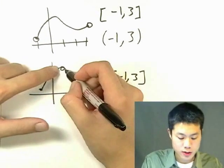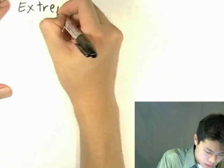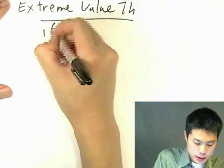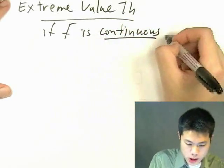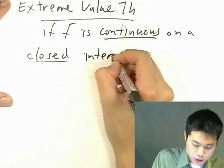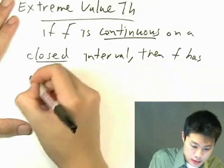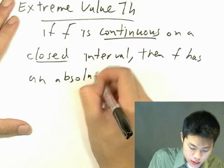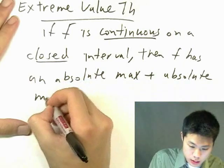Why is there no absolute maximum? Because we can always get closer to that open point. The Extreme Value Theorem states that if f is continuous and we are working on a closed interval, then f has both an absolute maximum and an absolute minimum.